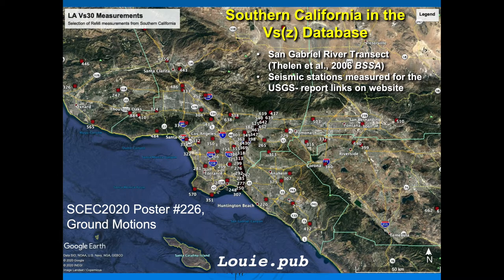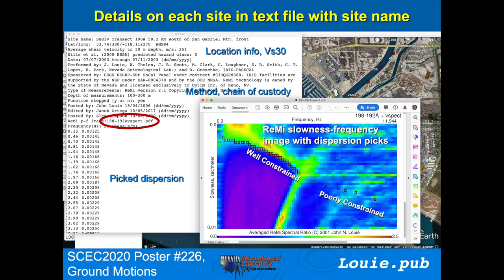You can also go directly to the database at my website louie.pub. Within the database, you will find files labeled with seismic station names. They each have location info, VS-30 summaries, and the method and chain of custody.